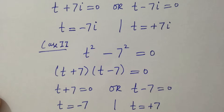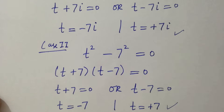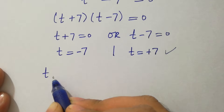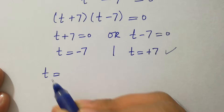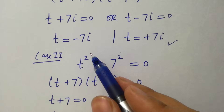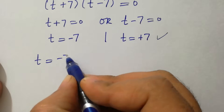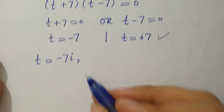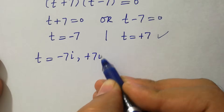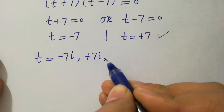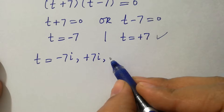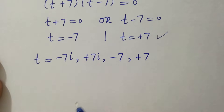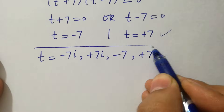From Case 1 and Case 2, the values of t are −7i, +7i, −7, and +7.